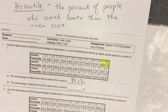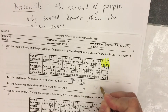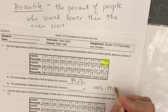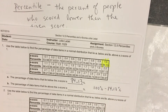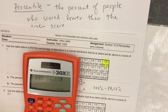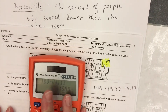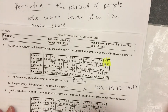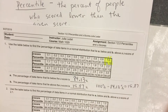The percent that are above 1 is going to be 100% minus 84.13%. I'll subtract that on my calculator: 100% minus 84.13% equals 15.87%. So the percentage of data items above a z-score of 1 is 15.87%.